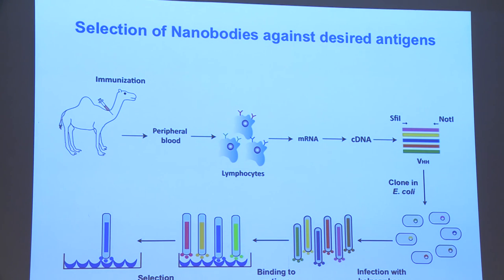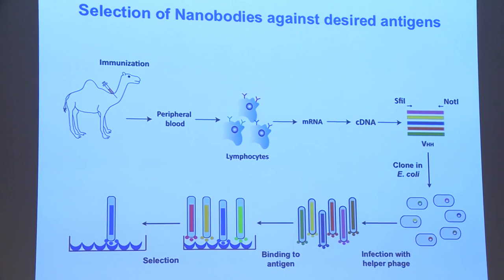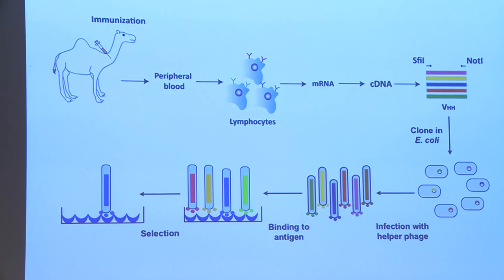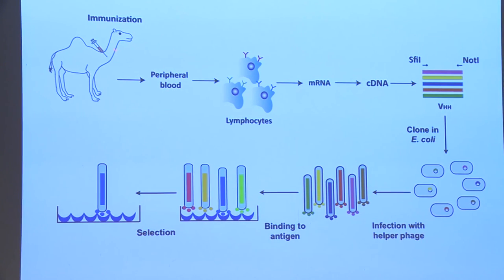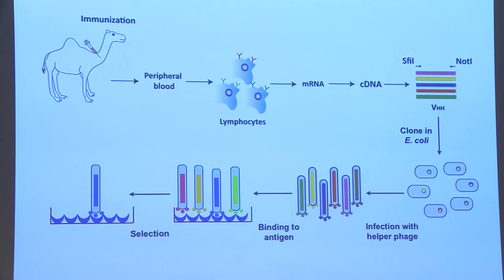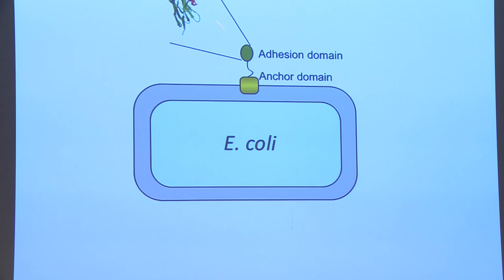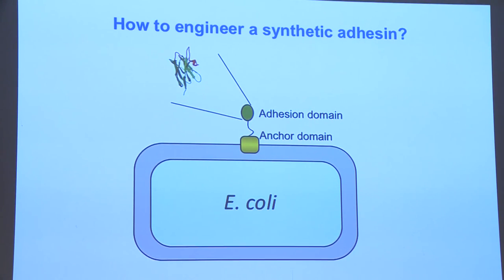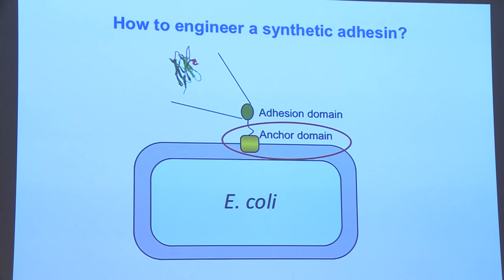This system also allows easy selection of the desired specificity. Briefly, after immunization of a camelid animal, you generate a library of genes from B cells, clone into E. coli, infect with bacteriophages, and make a phage display pool to select the clone recognizing the antigen of interest. We decided to use these nanobodies as adhesion domains, and we co-developed a way to anchor them on the E. coli surface.